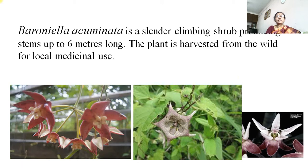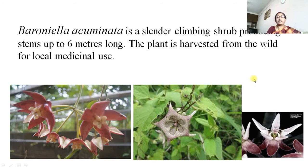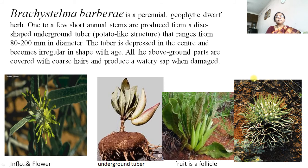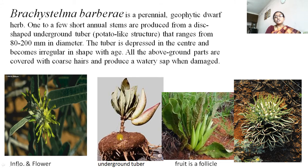Baronella acuminata is a slender climbing shrub producing stems up to 6 metres long. The plant is harvested from the wild for its medicinal importance and cultivated as a medicinal plant. Brachistelma barberi is a perennial or dwarf herb with one to few short annual stems produced from a disc-shaped underground tuber — a potato-like tuber from which the plant arises.